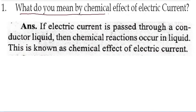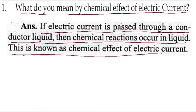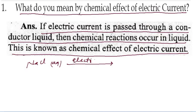What do you mean by chemical effect of electrical energy? If electric current passes through a conductor that is a liquid, then chemical reactions occur in that liquid. This is known as the chemical effect of electric current. For example, in a solution of NaCl, when electricity is passed, it converts into sodium and chloride ions, so this reaction takes place — that is the chemical effect of electric current.